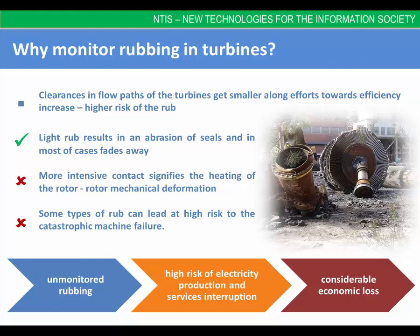Very often the light wrap results in an abrasion of seals and in most cases fades away. It begs the question: why monitor rubbing in turbines? The answer is that the rest of rub cases are a serious malfunction of the machine and can lead at high risk to catastrophic machine failure. More intensive contact causes heating of the rotor at the contact location and results in rotor mechanical deformation. In some cases the rub may rapidly deteriorate and cause catastrophic breakdown if not early detected, interrupting electricity production and resulting in indispensable economical loss.